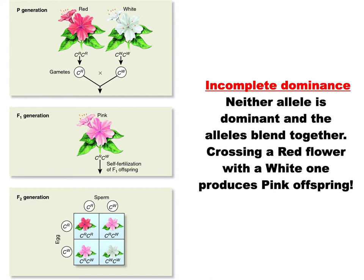So you take two parents and they both kind of mix, giving you a mixed color if you're a hybrid. If you're C-R, C-W, you're pink. That's incomplete dominance.